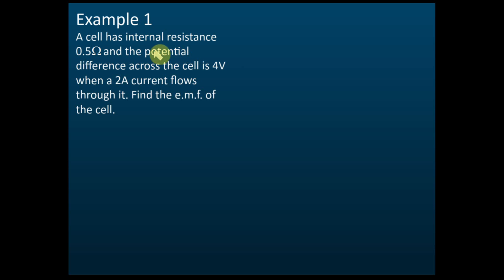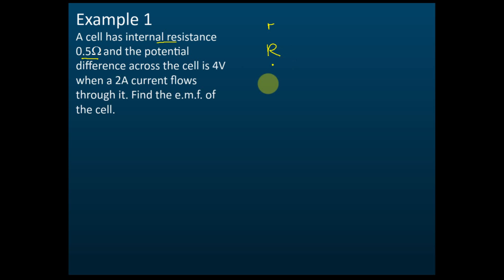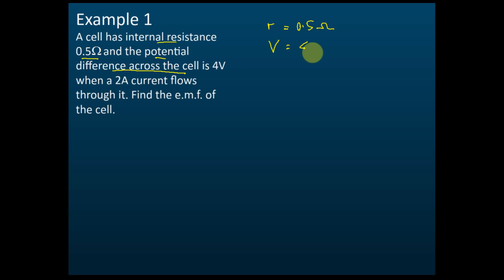Example one: A cell has internal resistance 0.5 ohm. For calculation questions, you need to label the information given. Internal resistance is represented by small letter r — don't write capital R, as that would make your calculations wrong. Internal resistance r equals 0.5 ohm. The potential difference across the cell — that means terminal potential difference — V equals 4 volts, and current i equals 2 amperes. Find the EMF.